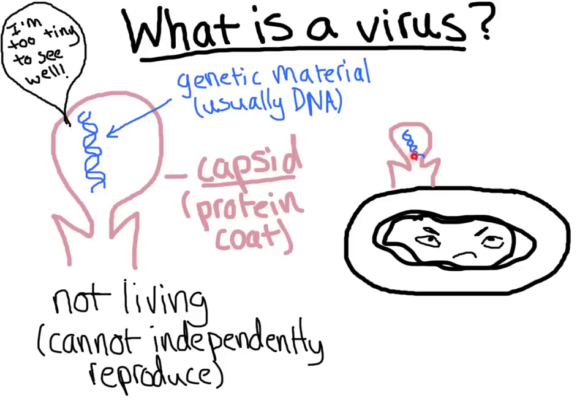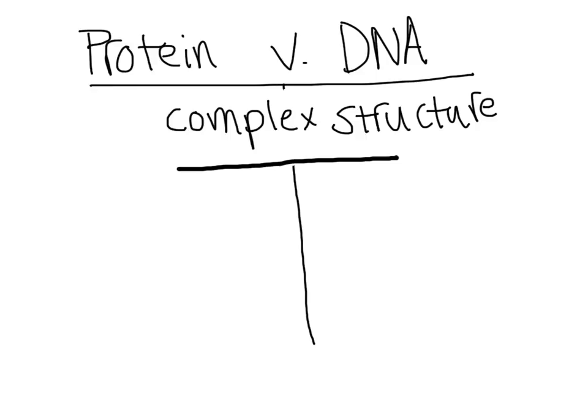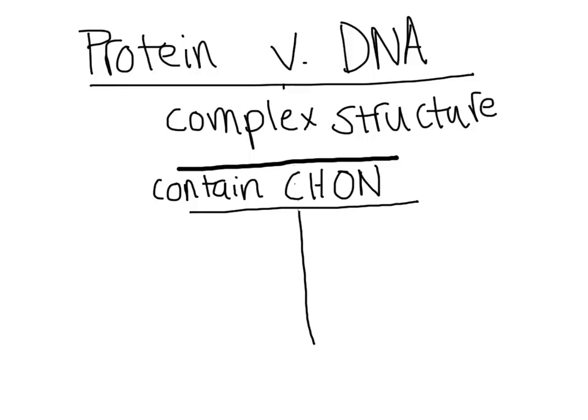Hershey and Chase were unsure whether protein or DNA contained the genetic information that the virus needed to put into the cell in order to infect it, because both protein and DNA have complex structures. These structures are also similar in that they contain carbon, hydrogen, oxygen, and nitrogen. However, there is one key difference: protein contains sulfur, while DNA contains phosphorus.